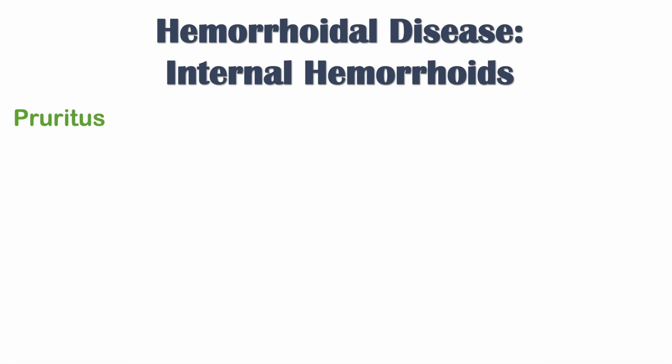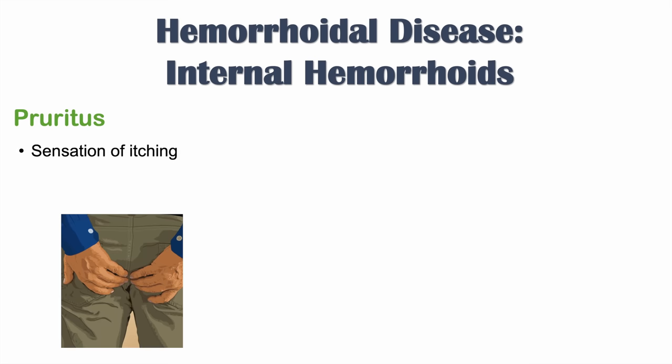Other signs and symptoms of internal hemorrhoids include pruritus — a sensation of itching. This is due to prolapse of the internal hemorrhoid, irritation, or incontinence. If the hemorrhoid is irritated or if there's mucus discharge, it can lead to irritation of the surrounding tissue, causing itching.